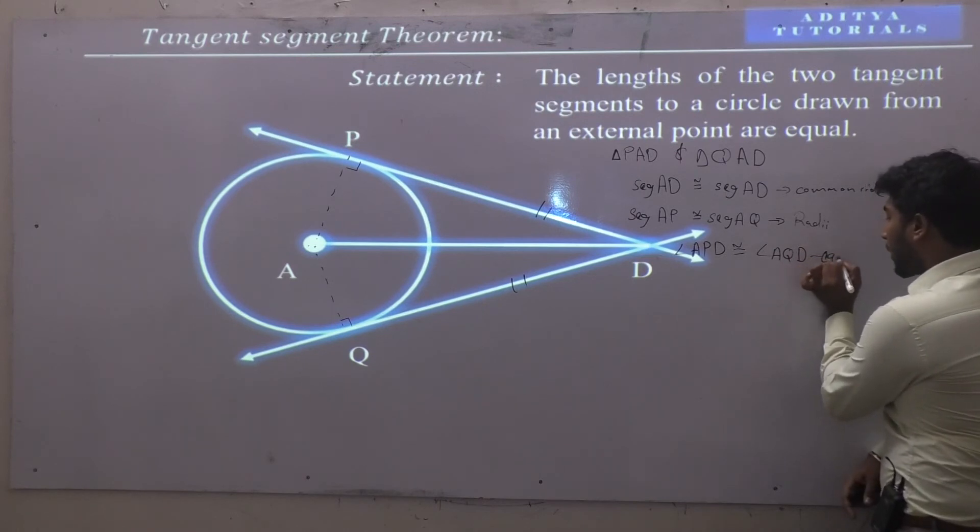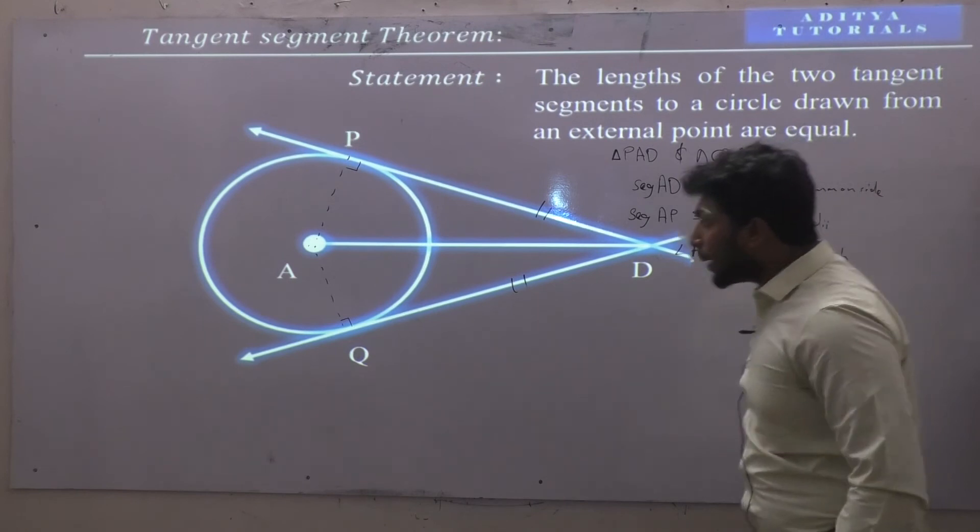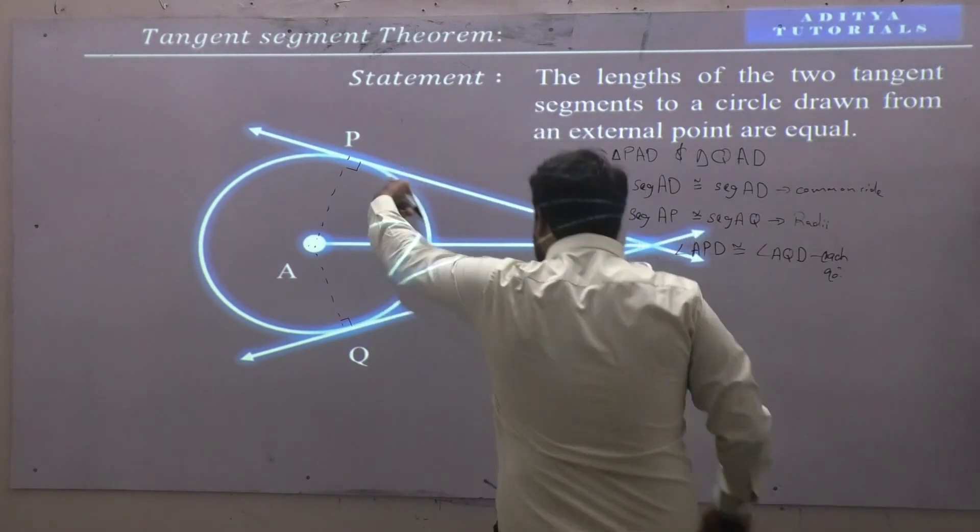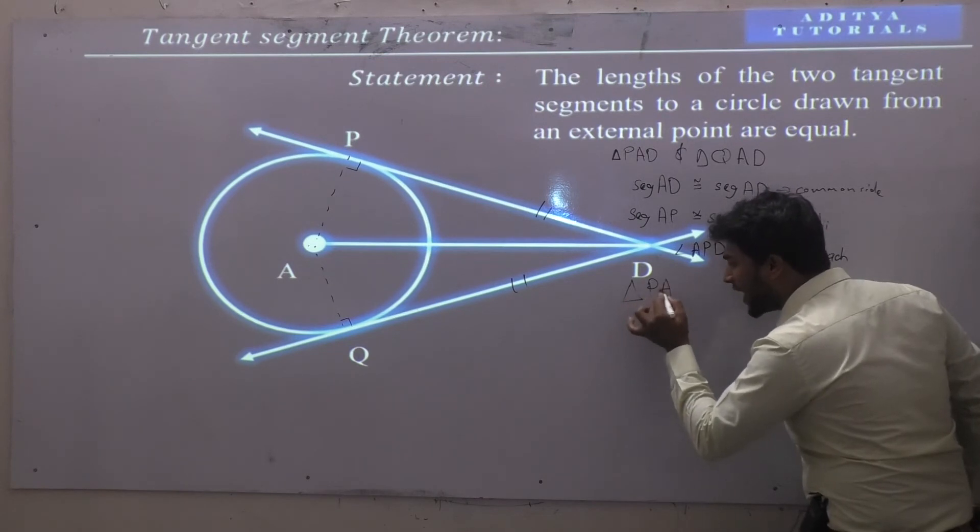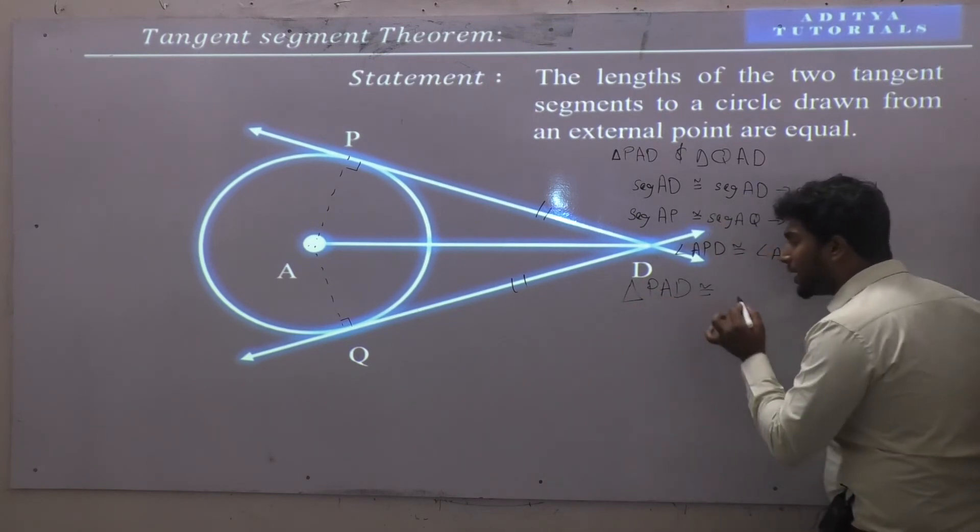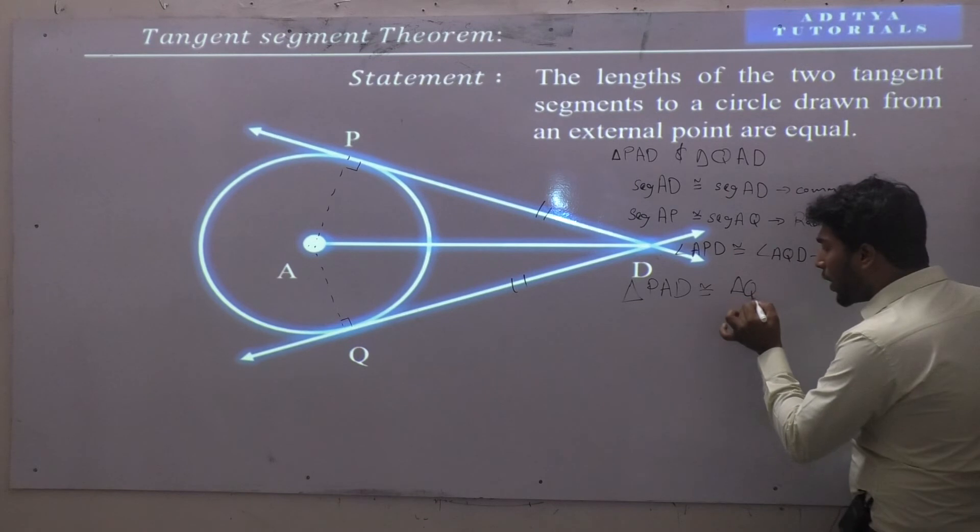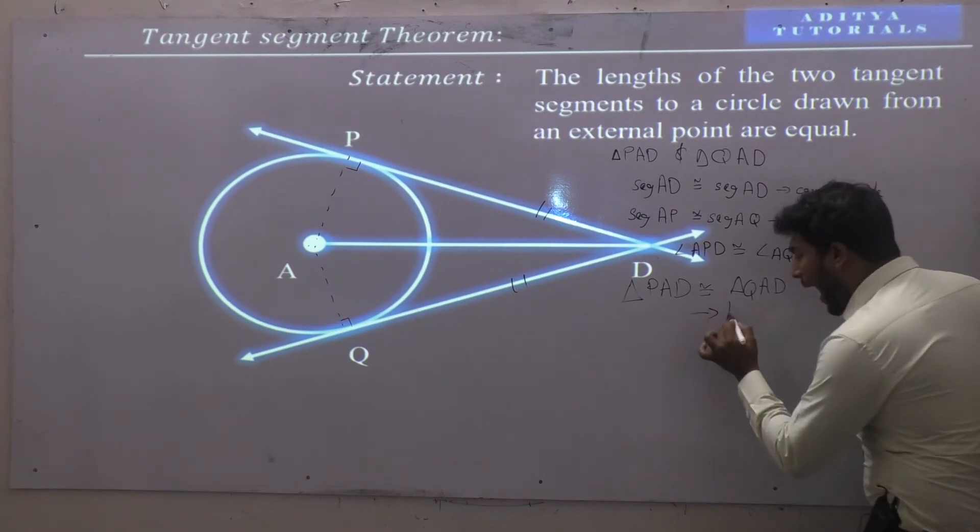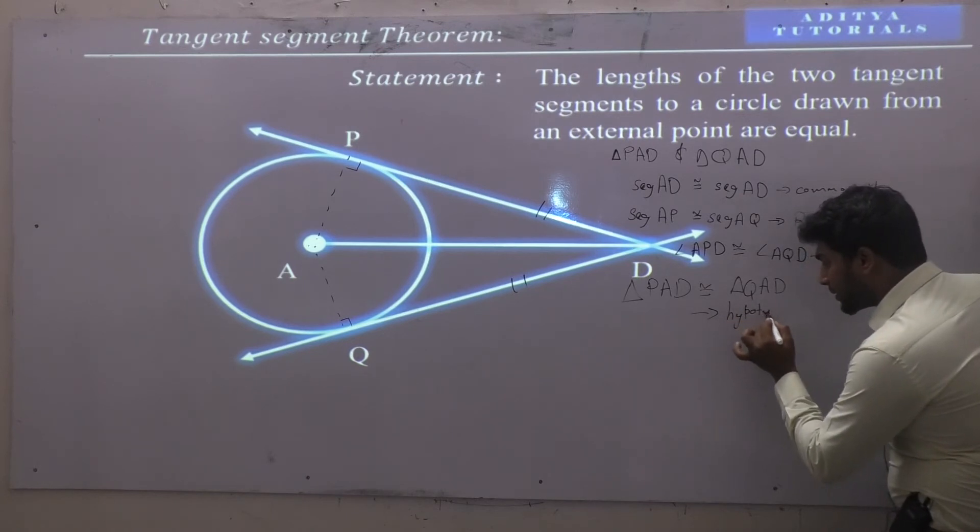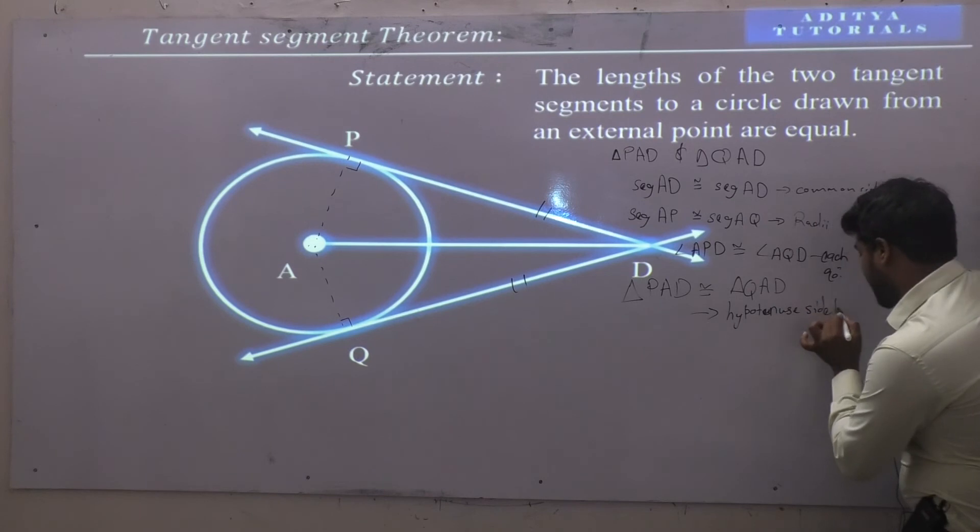Each 90 degree. What is this? I can say that these two triangles, that is triangle PAD is congruent to triangle QAD by hypotenuse side test.